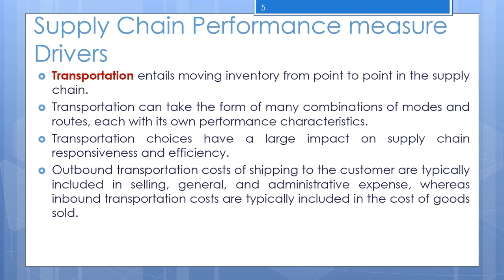The next component is the choice of transportation mode — the manner in which the product is moved from one location in the supply chain network to another. Companies can choose between air, truck, rail, sea, or pipeline as modes of transport. Today, information goods can also be sent through the internet. Each mode has different characteristics with respect to speed, size of individual parcels, cost of shipping, and flexibility.